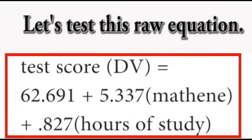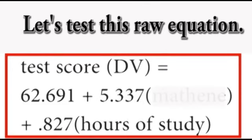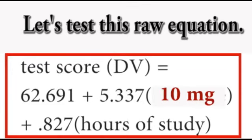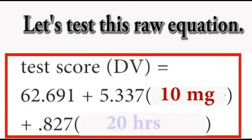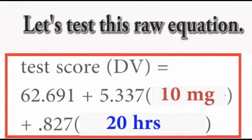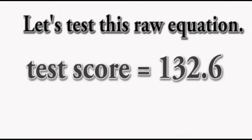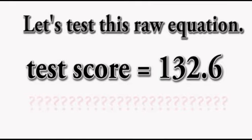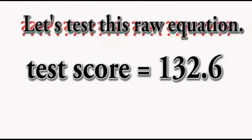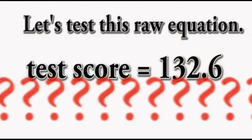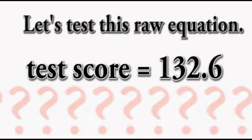So let's put this to the test. If we were to get a new student in the class, and we gave that student 10 milligrams of mathene, and that student studied for 20 hours for this test, we could plug those numbers in, and we would end up with a test score of around 132. The test scores don't go over 100. So unless this new student was granted some sort of special privileges, or the teacher felt sorry for them and allowed them to do extra credit, a test score of 132 doesn't really make much sense.